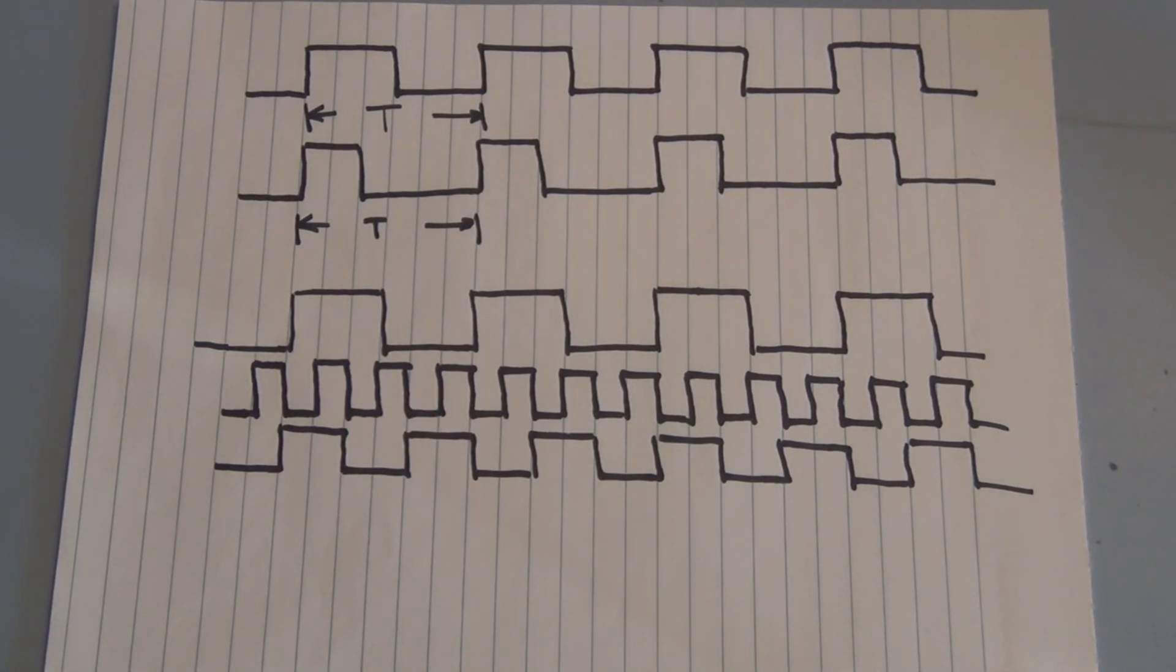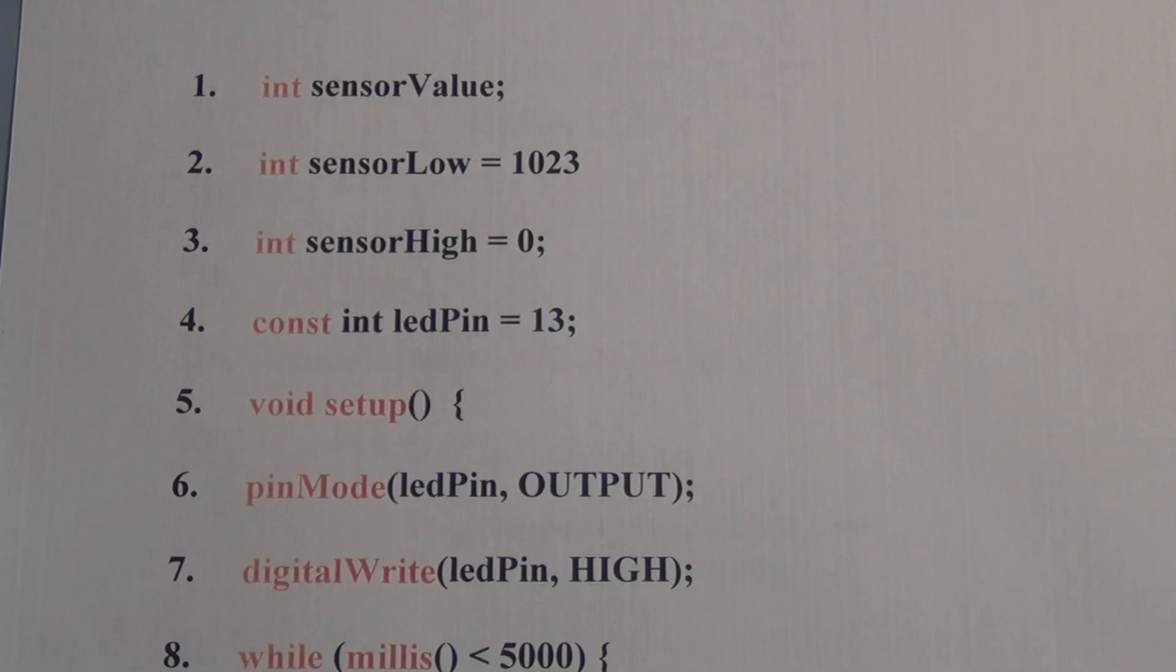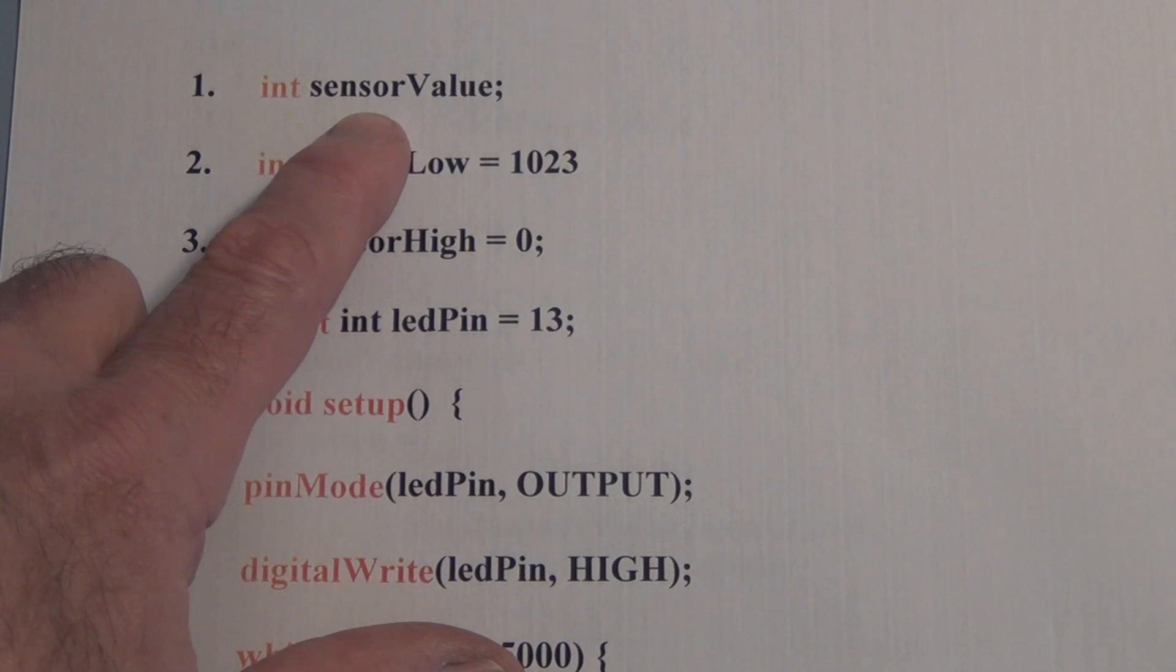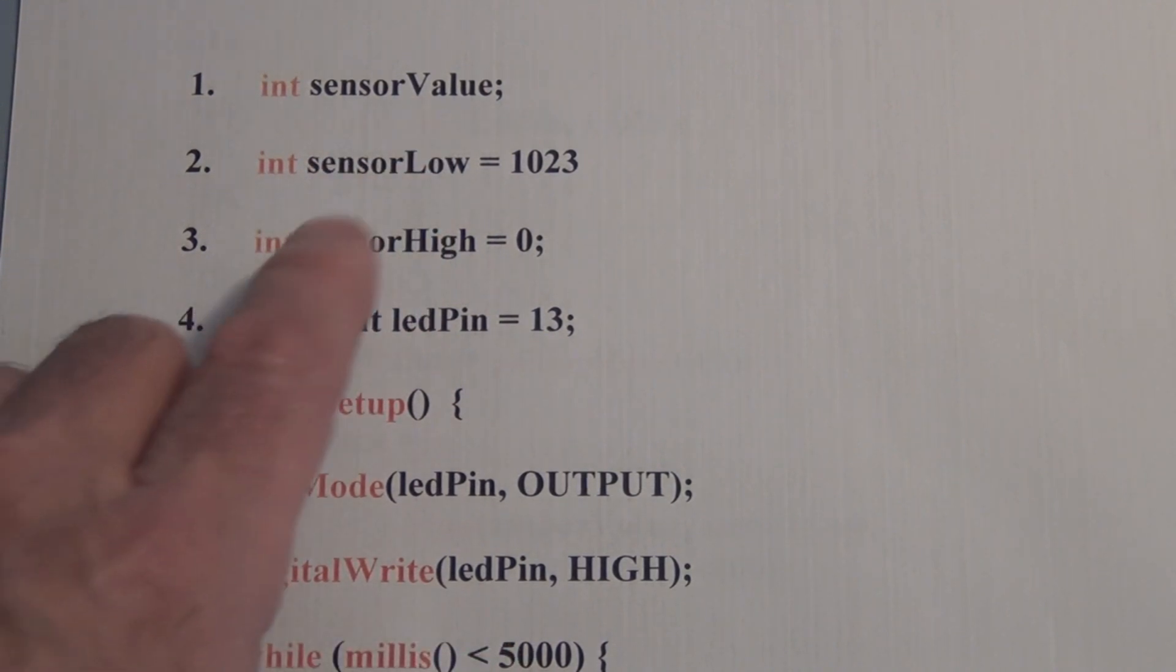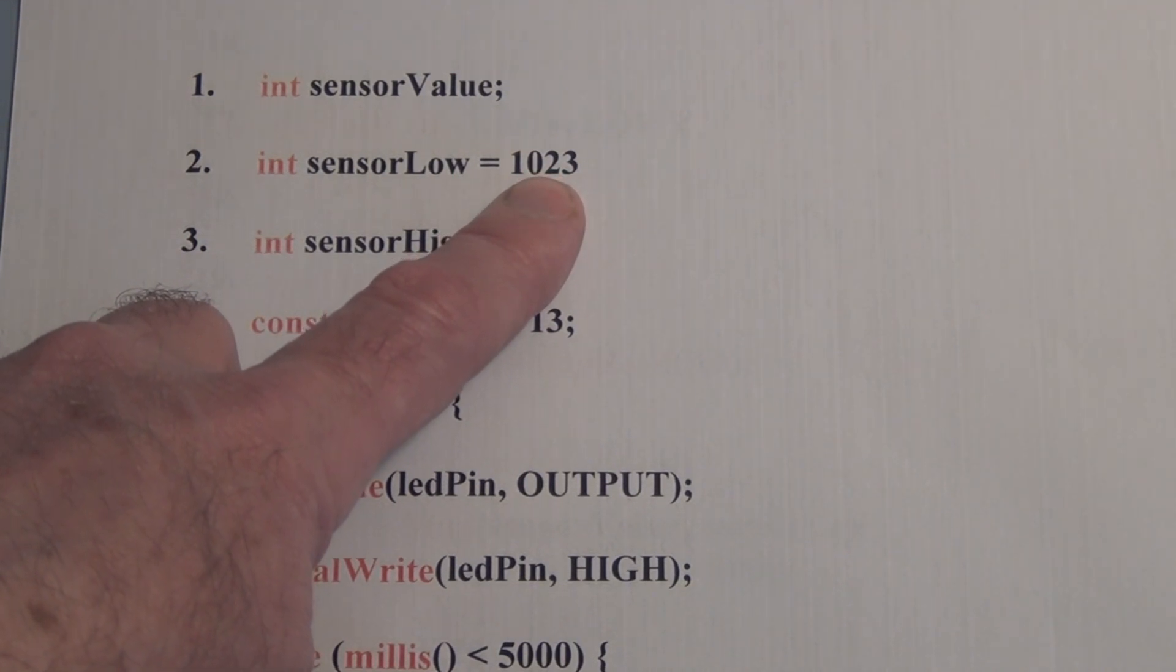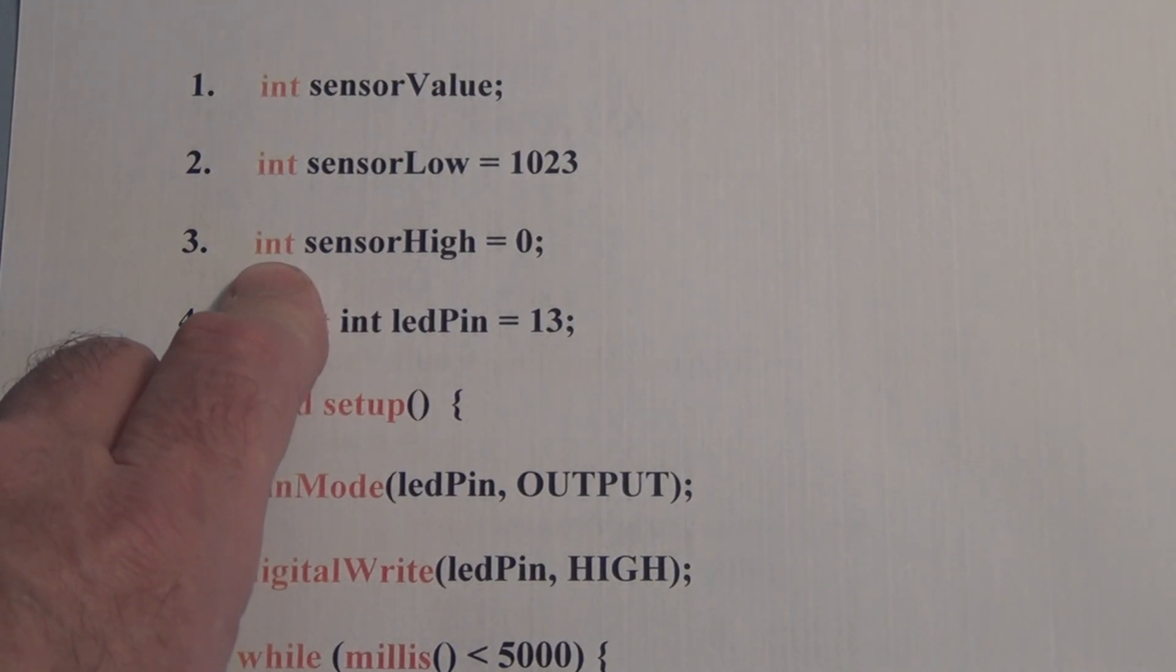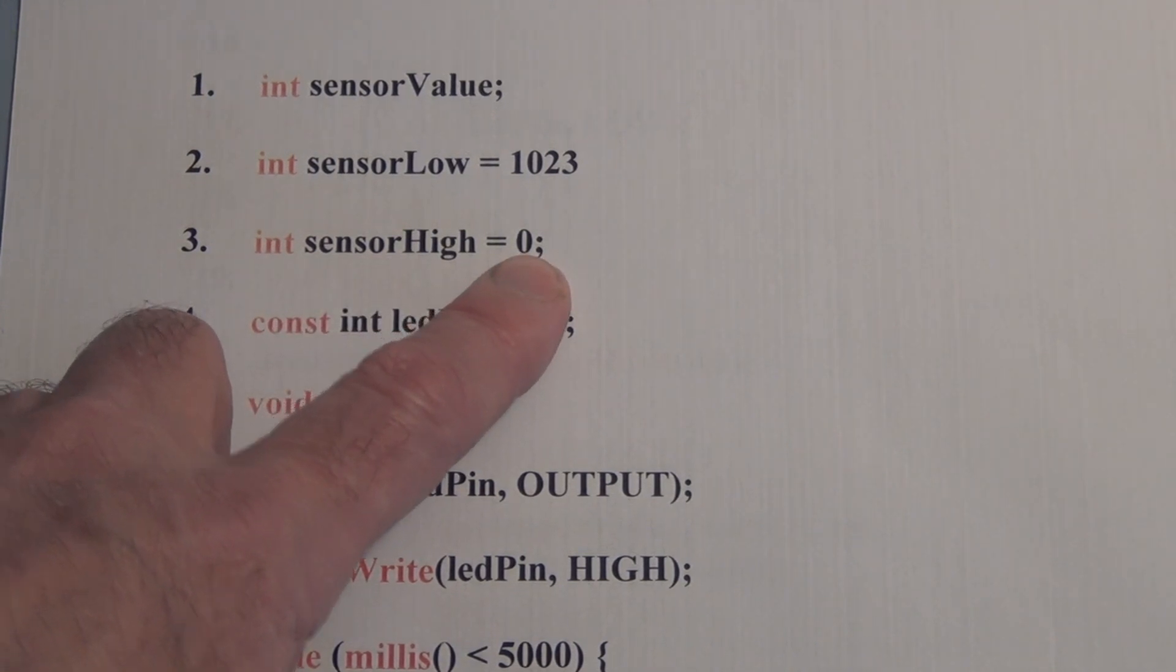So let's take a look at the program real quick. So first we declare an integer variable called sensor value. This is going to be the analog voltage that is applied to the input of the onboard analog to digital converter. And we're going to declare an integer variable called sensor low and initialize that to 1023. Then we're going to declare an integer variable called sensor high and assign that the value zero.